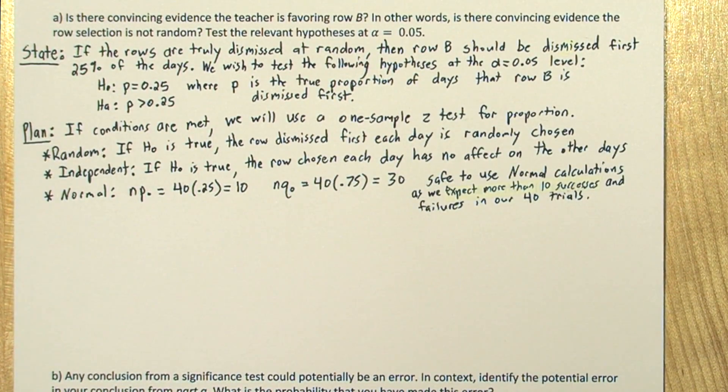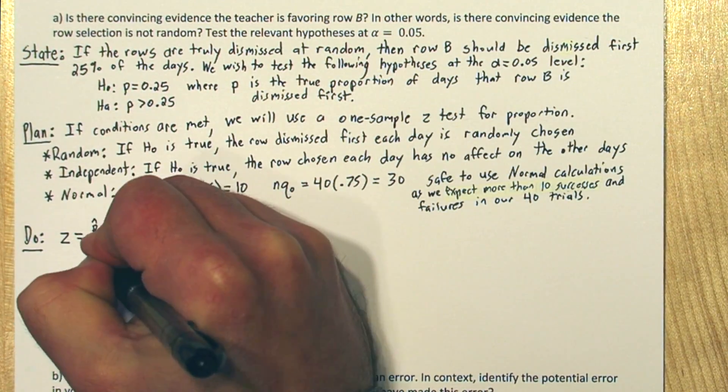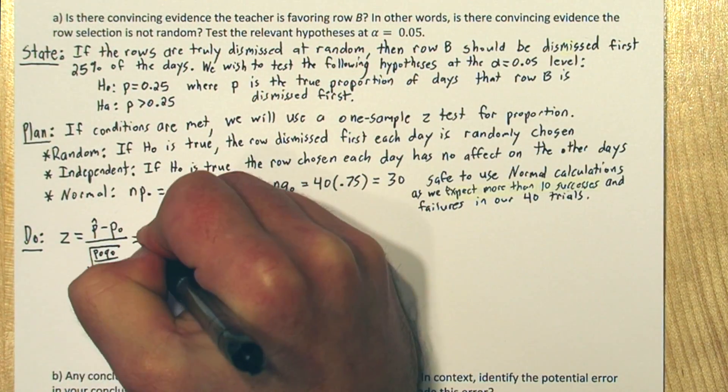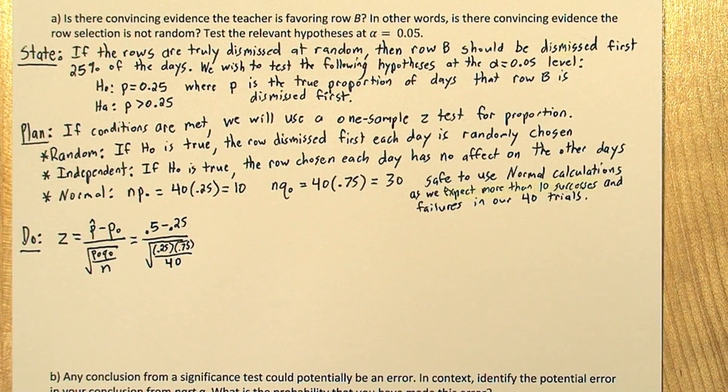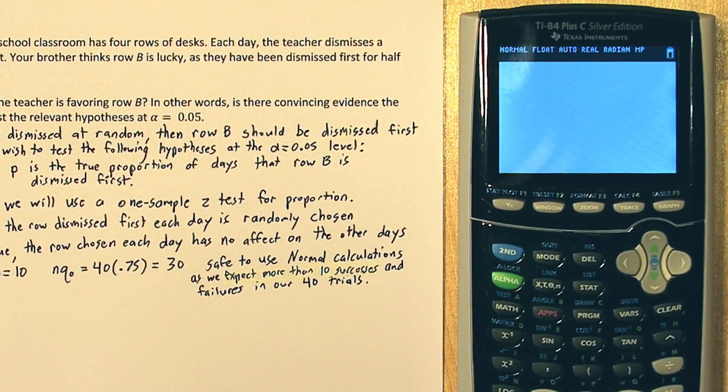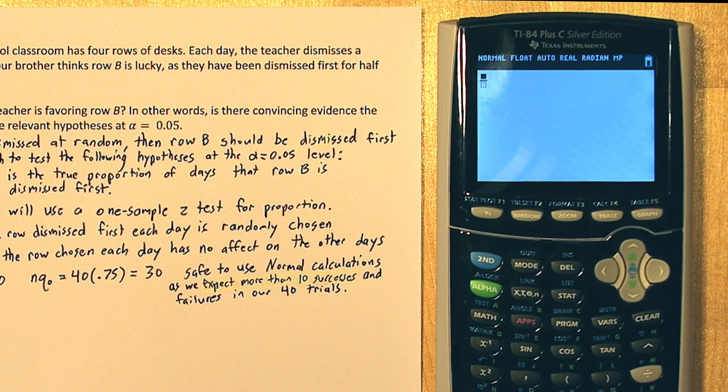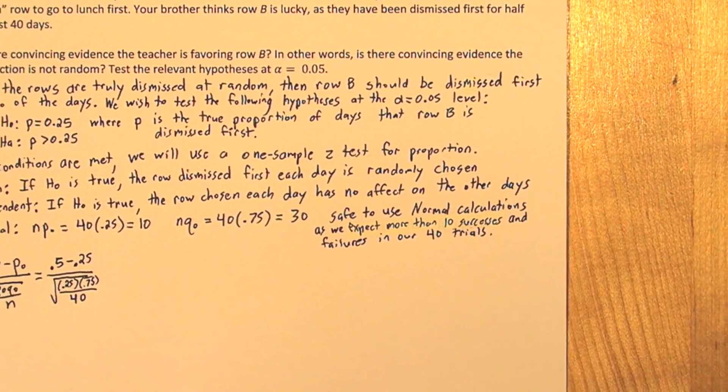Now we're ready to calculate our test statistic. Since half of the 40 days row B was dismissed first, our sample proportion is 0.5. We're going to subtract 0.25, the null proportion, and divide by the standard error. A good trick on the calculator is to press alpha and y equals. This allows you to input fractions. So our test statistic is approximately 3.651.